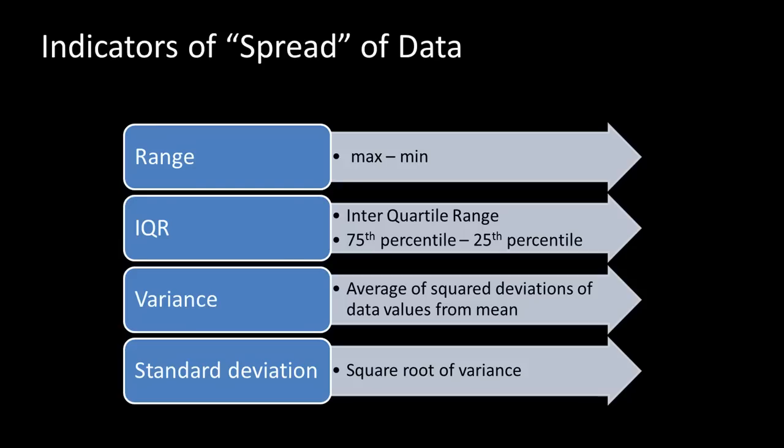Variance is the average of the squared deviations of the data values from the mean. We'll look at how to calculate variance shortly. Standard deviation is simply the square root of variance. If one is just the square root of the other, why do we need both? There's a good enough logic for why we use standard deviation, and we'll get into that shortly.